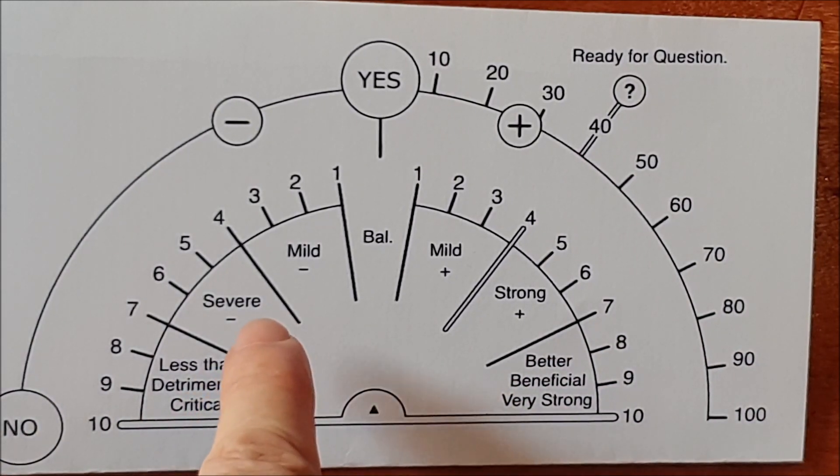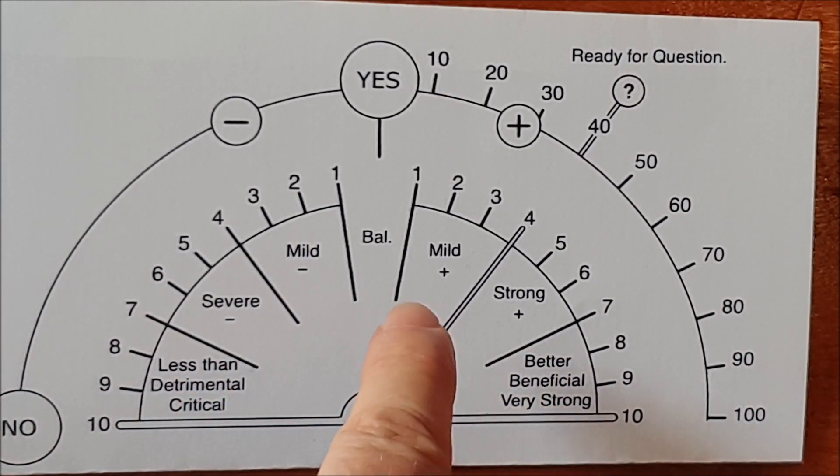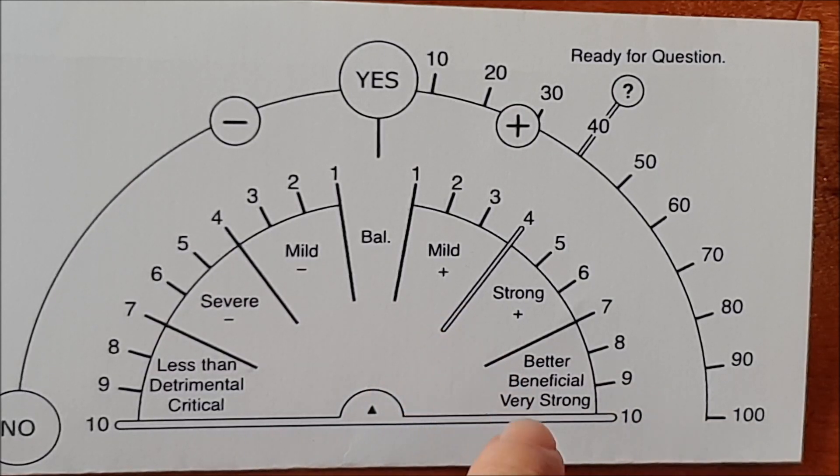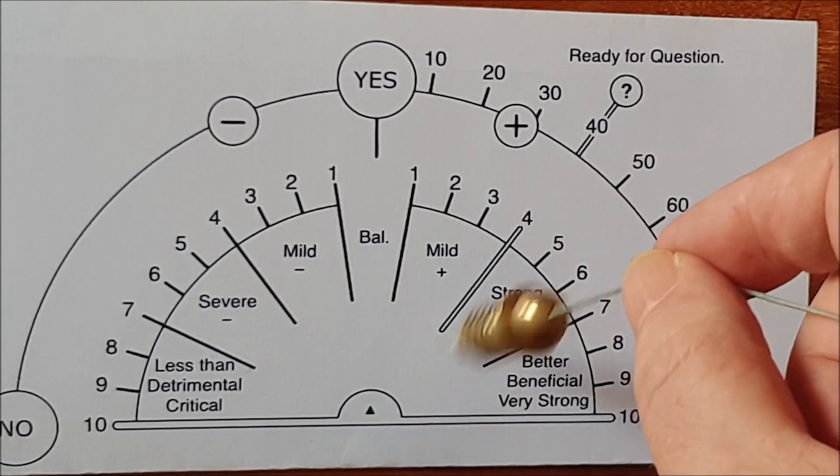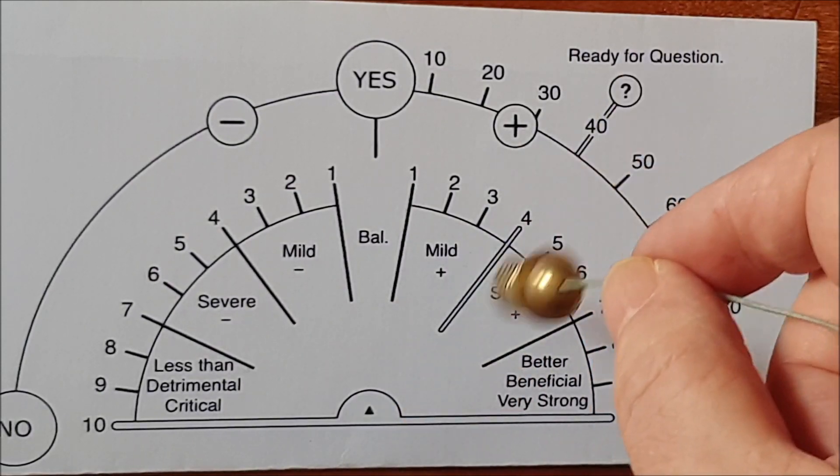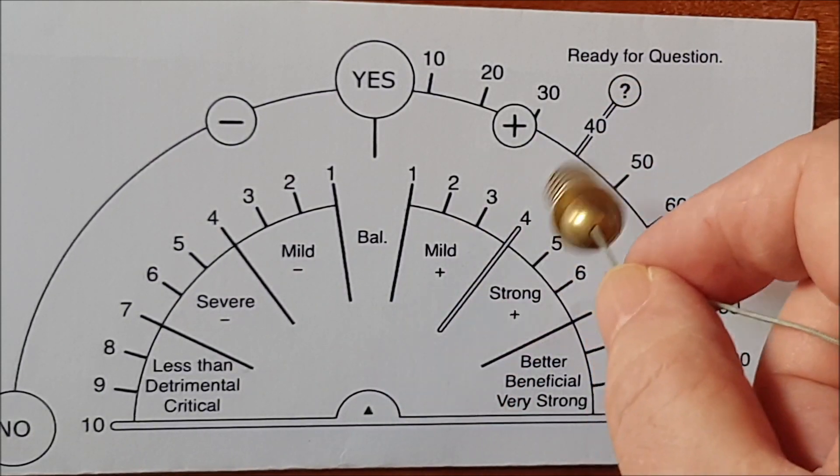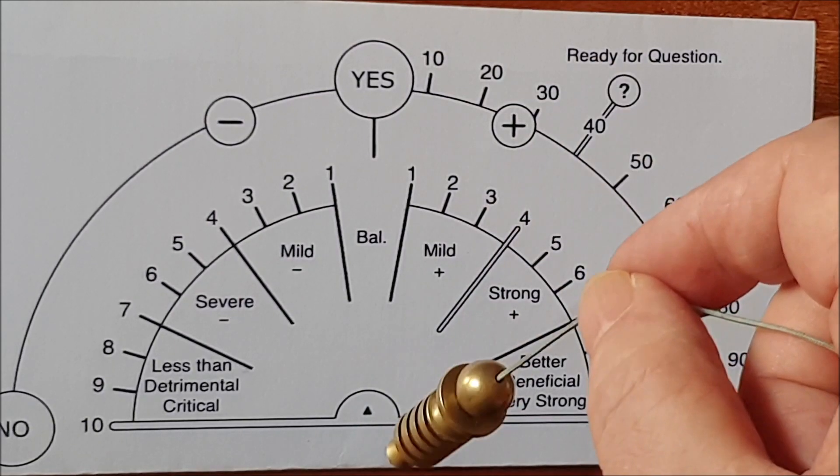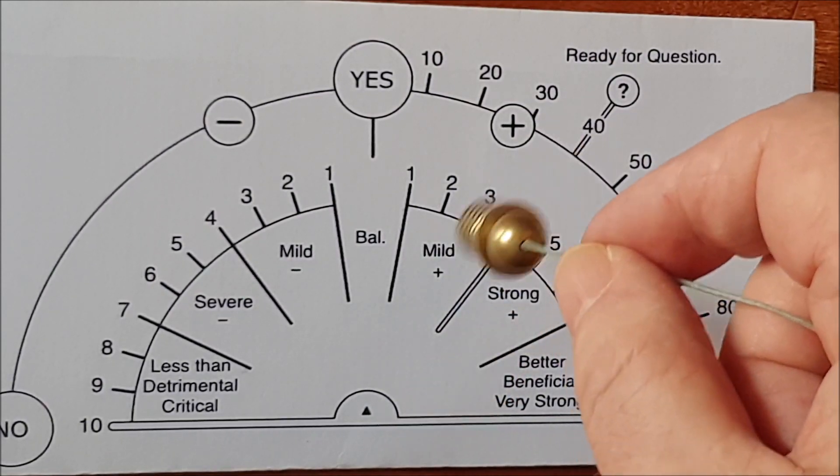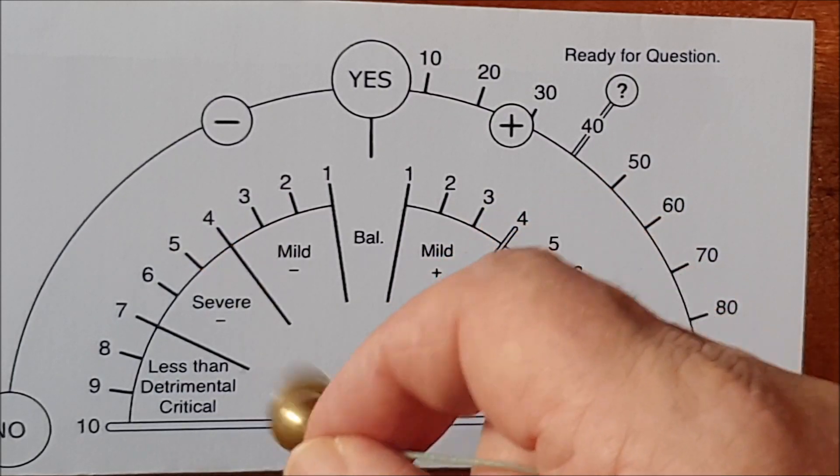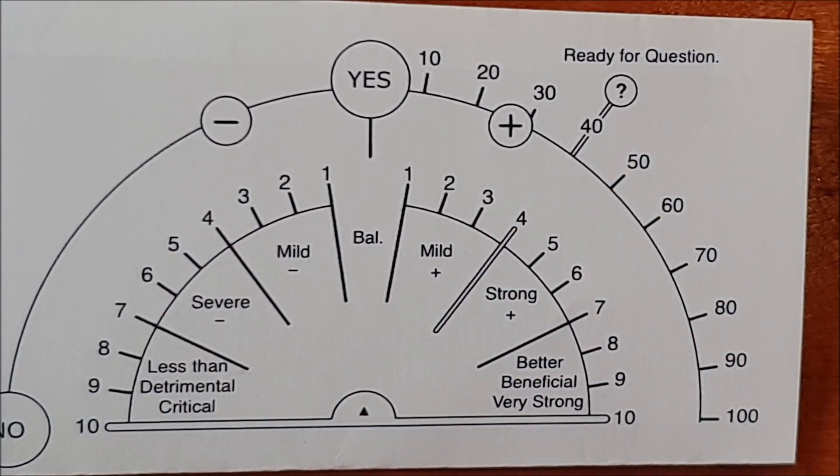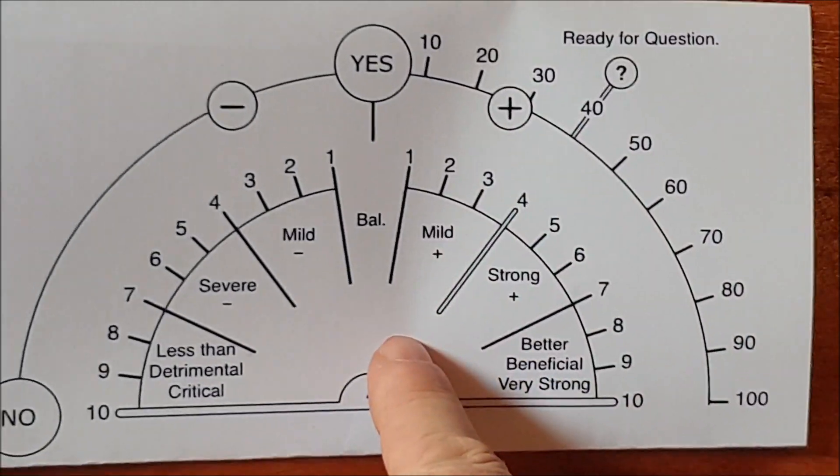You can see we have all these other subdivisions here which you can assign different things to: strong, better, very strong, critical and ready to question. You start your pendulum up in this position here instead of in the vertical position. The right hand side of the scale is positive, it goes 1 to 10, and the left hand side is negative and goes 1 to 10. If you like using charts you might want to try experimenting with this. As I say, I always like to keep it simple.